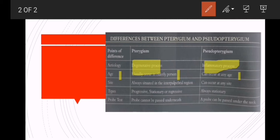On the basis of site, pterygium is always situated in the interpalpebral region, while pseudopterygium can occur at any site.